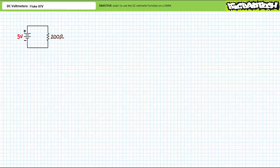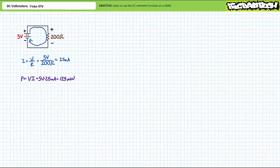Let's use this circuit for the first half of this lecture to demonstrate the use of the voltmeter. Consider a 5-volt source supplying current to a 200-ohm resistor. The application of Ohm's law demonstrates this resistor would draw 25 milliamps of current. Application of the power formula demonstrates this resistor would dissipate 125 milliwatts of power. Given the direction of conventional current travel, we should expect a 5-volt drop across the resistor, oriented positive to negative, top to bottom. To measure the voltage rise induced by the source, one would place the DC voltmeter common lead on the negative terminal and the red lead on the positive terminal of the voltage source. A voltmeter configured in this fashion would measure a 5-volt rise.